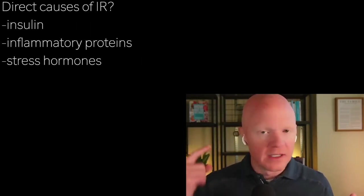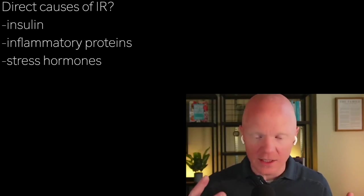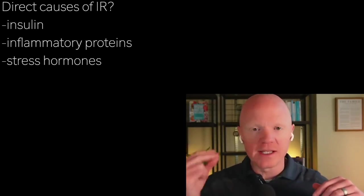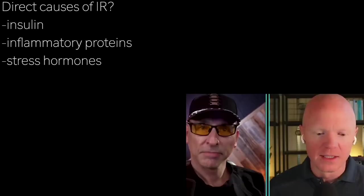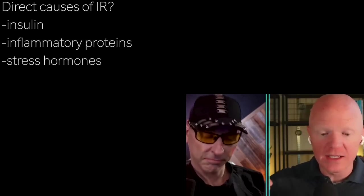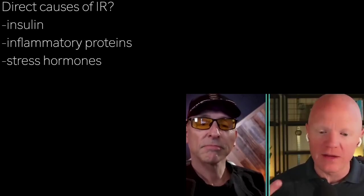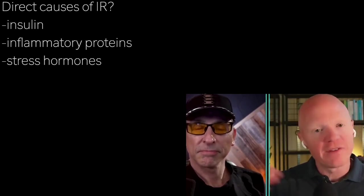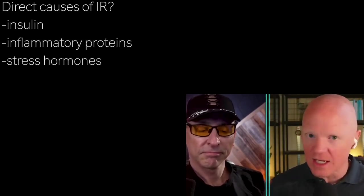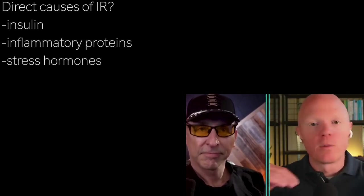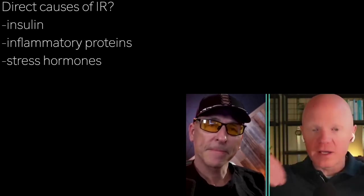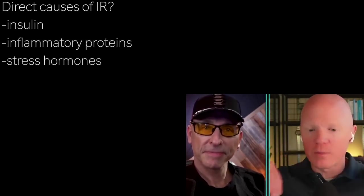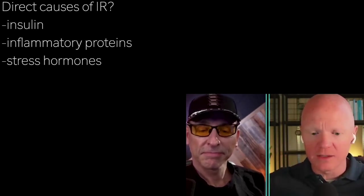Insulin is a direct cause. Inflammatory proteins are a direct cause. In that same cell culture, I can put on cytokines and they're insulin resistant in minutes. Stress hormones — I can incubate those cells with cortisol or epinephrine and they'll become insulin resistant. But if I do it with linoleic acid, it's not quite the same effect. With all of the myriad metabolites that can be generated, it is very possible that some of those could have a direct effect.